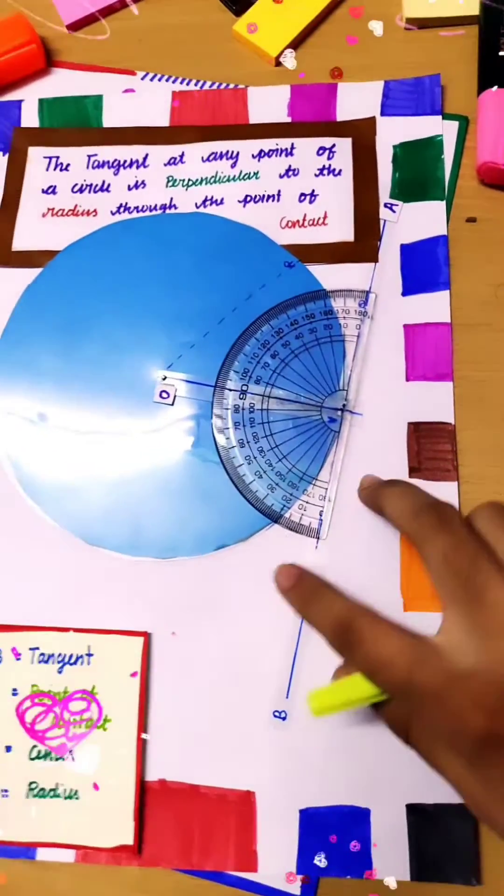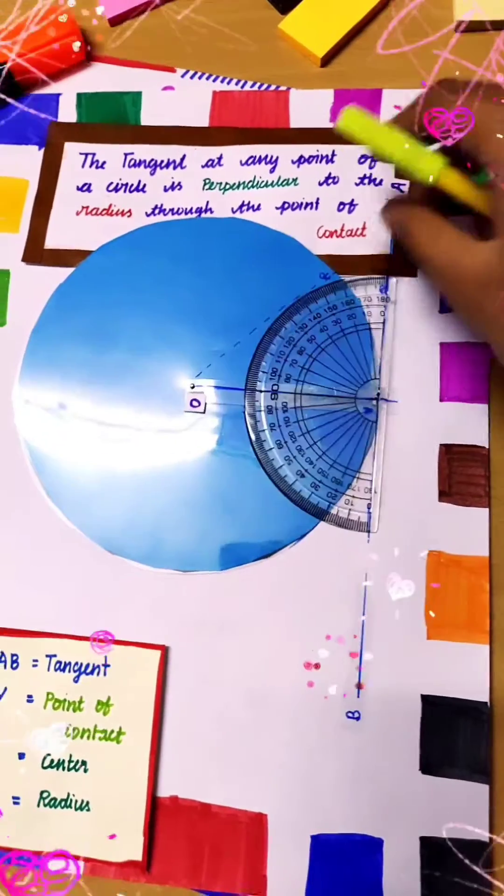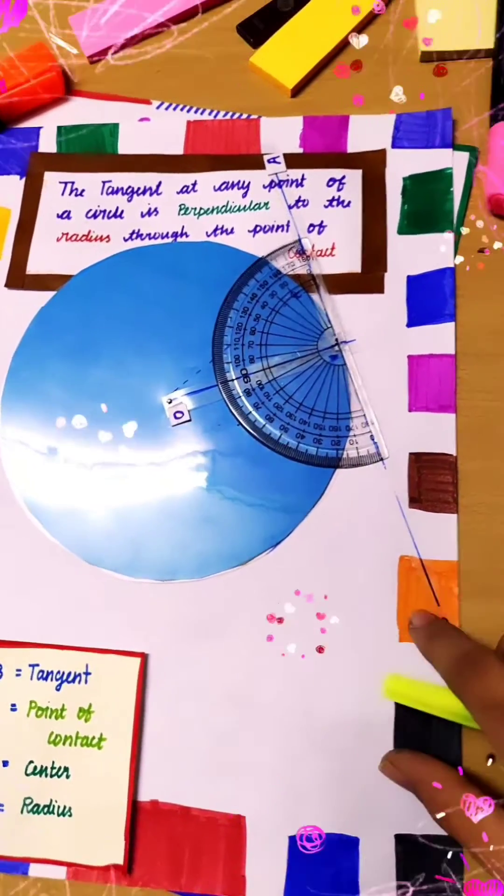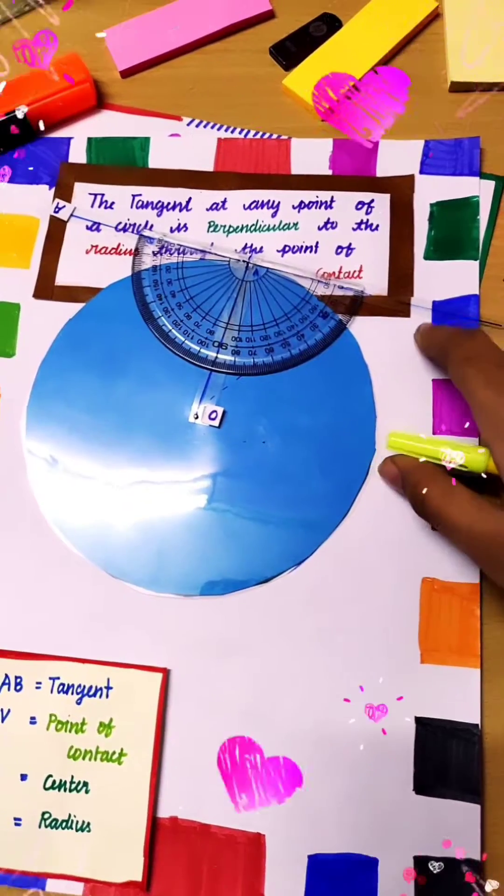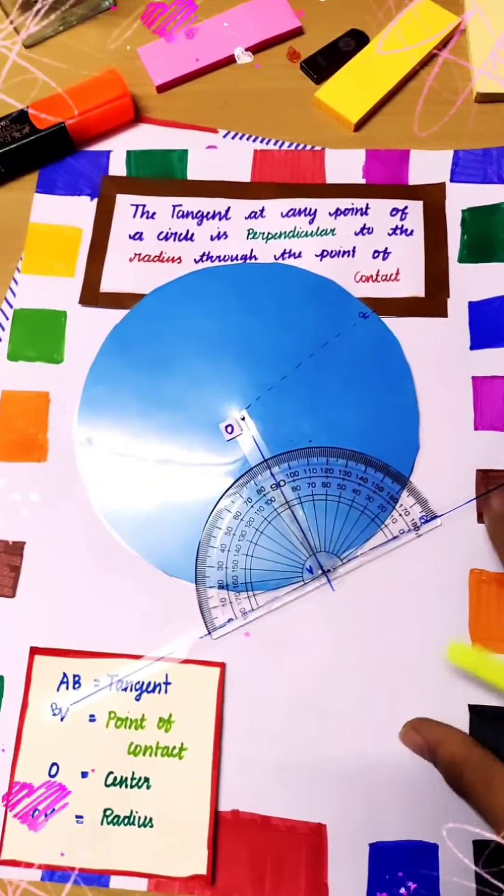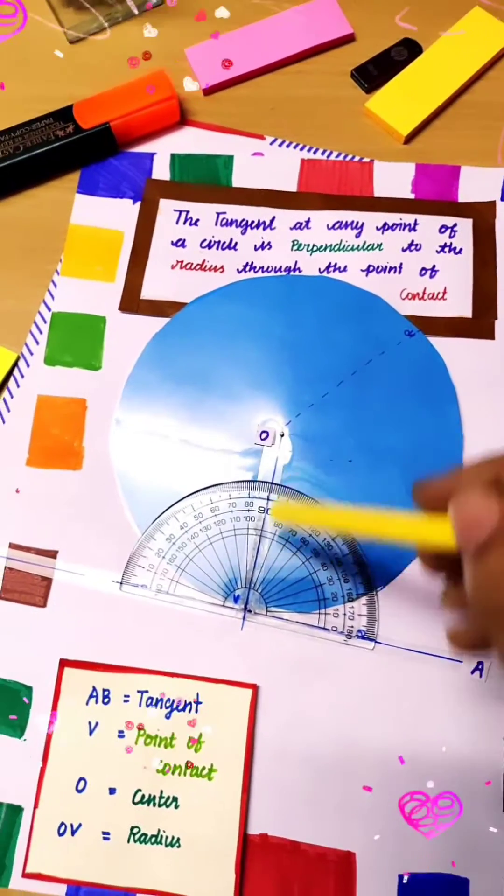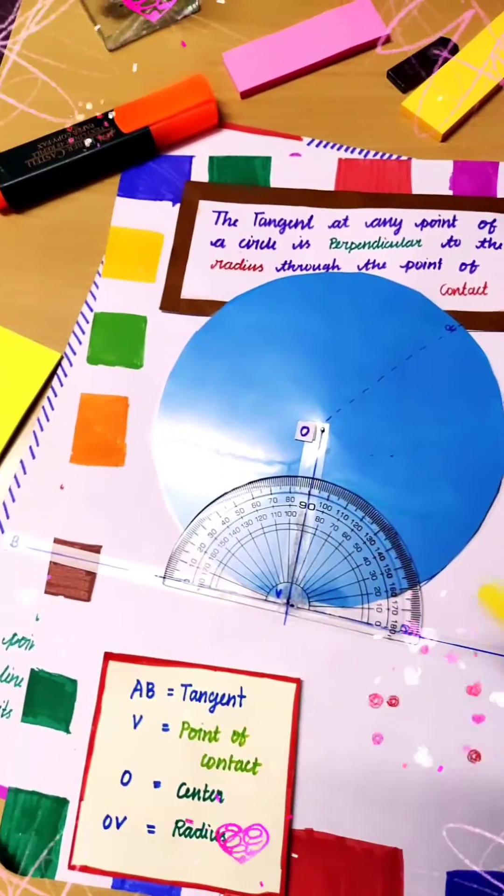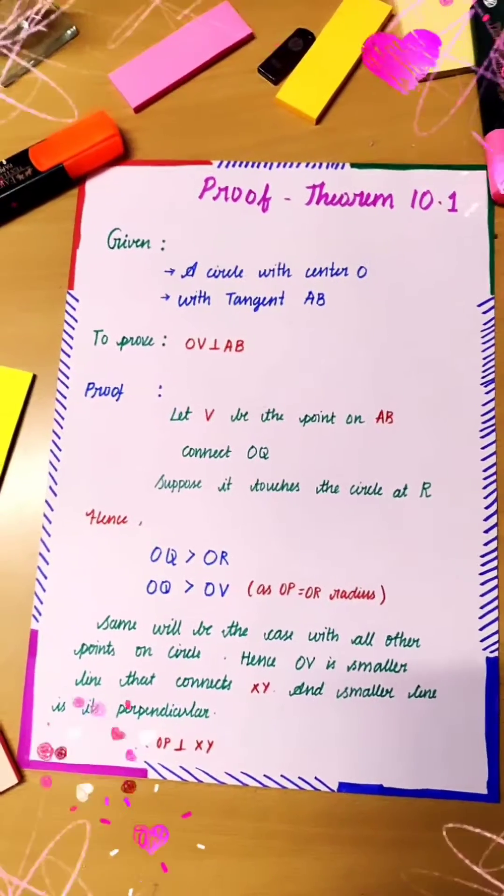is always 90 degrees. It never changes. Yeah, I guess you all can see it clearly. And this is how we can visually prove that the radius is perpendicular to the tangent.